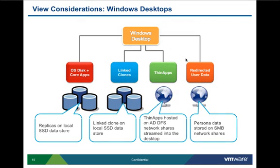Let's move on to the final section: View and vSphere considerations. Starting with the Windows VM — in our design we stored the master image in an SSD datastore, and the replica is stored on a local or SSD datastore. ThinApps are hosted on ADFS network shares at each site and streamed to the desktop. Your environment's application workload will determine whether you want to do this or deploy applications directly in the master image. From a Persona standpoint, we stored data on SMB network shares.